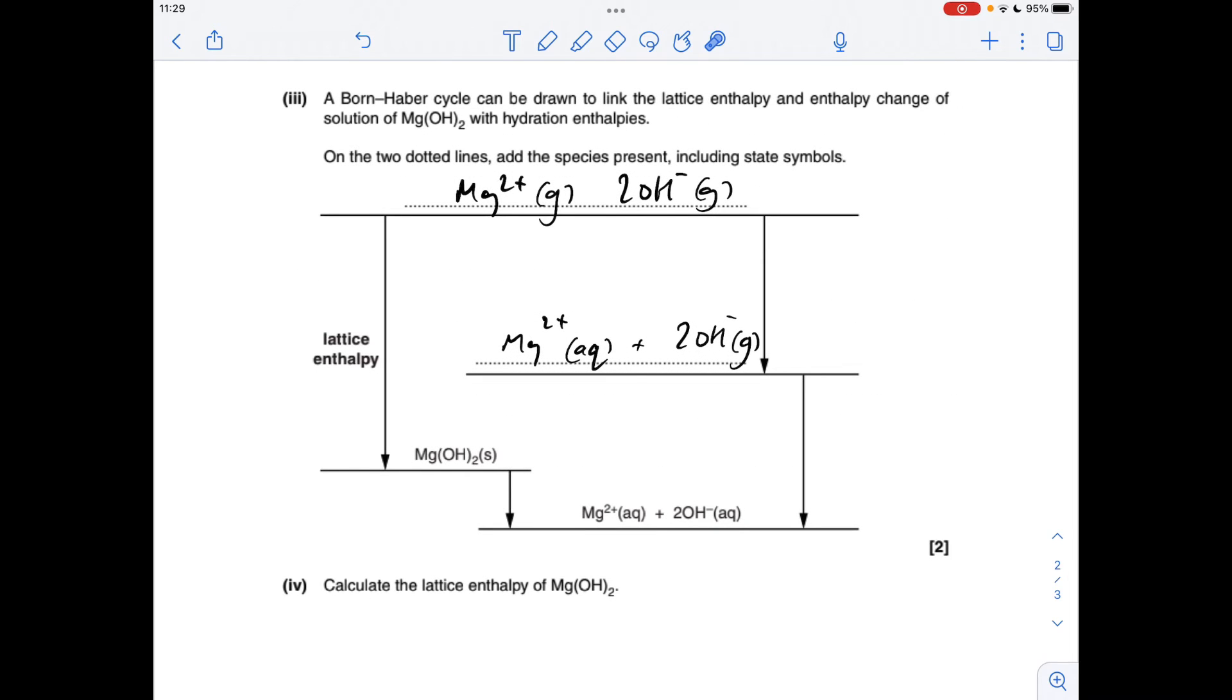Next part, the different species present. So we've got the gaseous ions at the very top and you can either do it like I have - you can do the aqueous Mg²⁺ with your two gaseous hydroxide ions here, or the other way around. So you could leave this as gaseous and make them the aqueous ones.